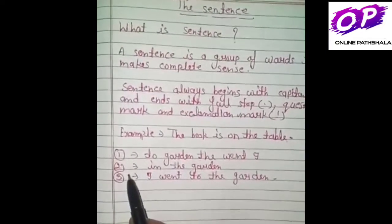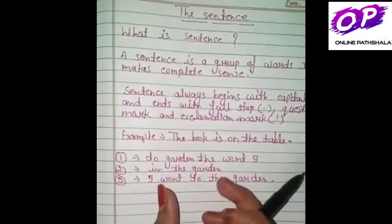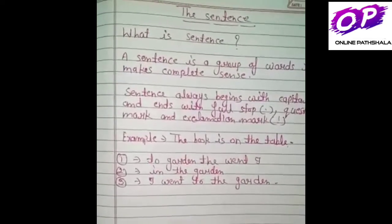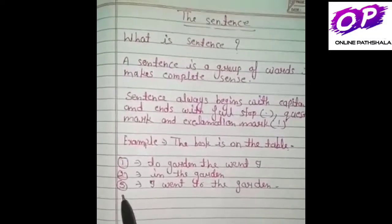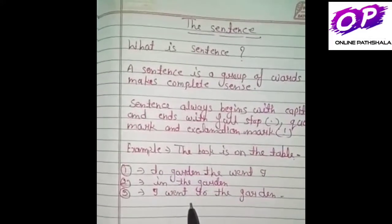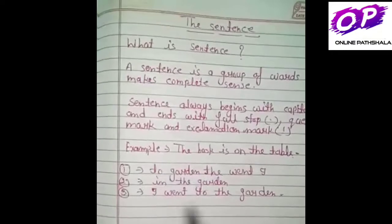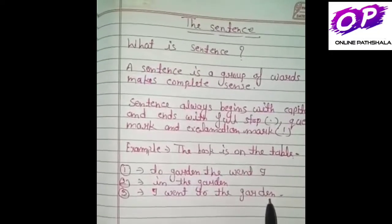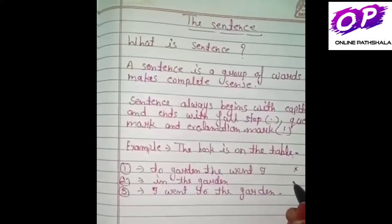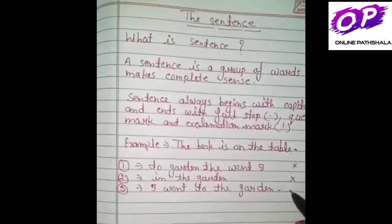In the second example, 'in the garden' — the group of words makes sense but not complete sense. Second वाले में meaning तो निकल रहा है, लेकिन यह complete sense नहीं निकल रहा, इसलिए इसे भी sentence नहीं माना जाएगा। In the third example, 'I went to the garden' — the group of words makes complete sense and is a sentence। Third वाले example में sentence का complete sense निकल रहा है, इसलिए इसे sentence कहा जाएगा।